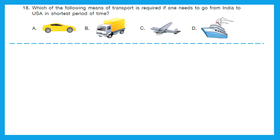Question 18: Which means of transport is required if one needs to go from India to USA in the shortest period of time? We have to go from India to USA, so there is a huge distance between them. The fastest mode of transport here is an aeroplane. That should be our right answer, option C. By aeroplane, we can go from India to USA in the shortest possible time.